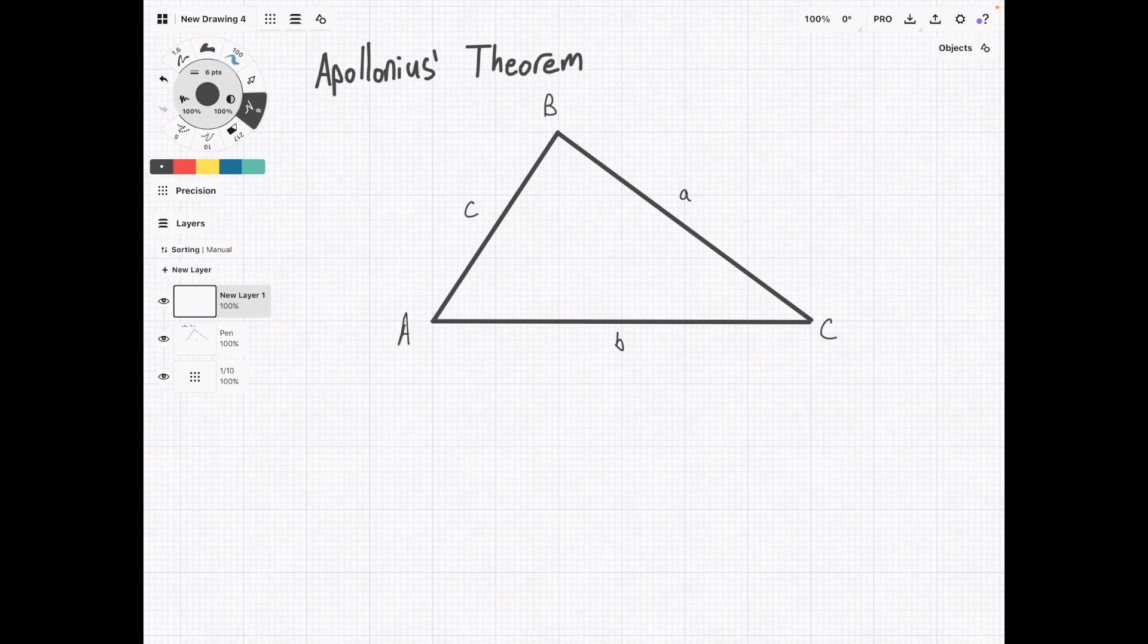Median is a line drawn from one of the vertexes of a triangle to the midpoint of the opposite side. We're going to say that this has a length of d, and a median bisects that side, so each part is equal to the same length, so that's going to be m for us.